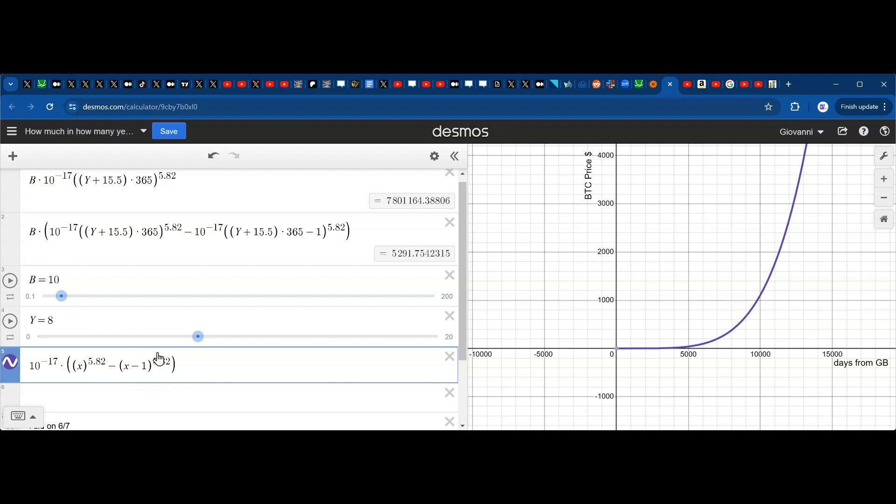This is the usual power law formula: 10 to the minus 17 times the number of days from the Genesis block to the power of 5.82, and we subtract it from the previous day. The previous day will be x minus 1. If you take these subtractions, it's basically calculating the value of power law at this particular day minus the value at the previous day.